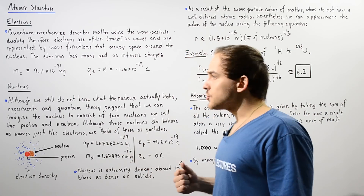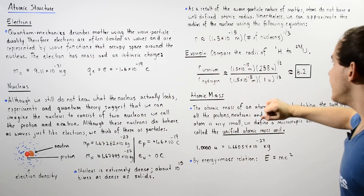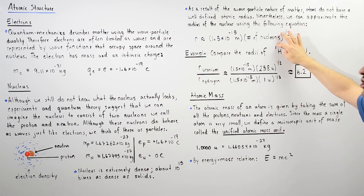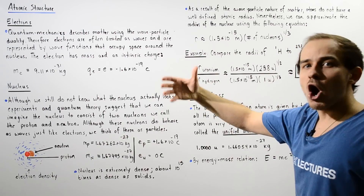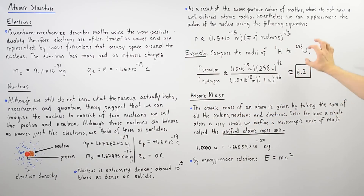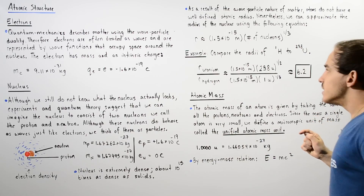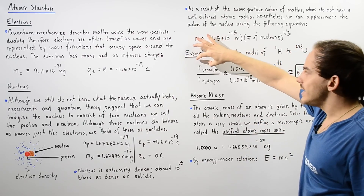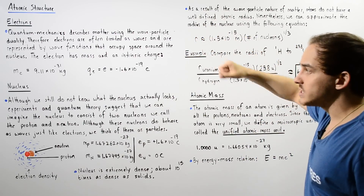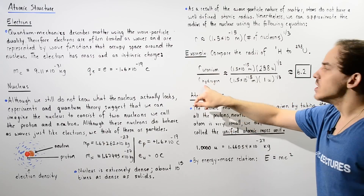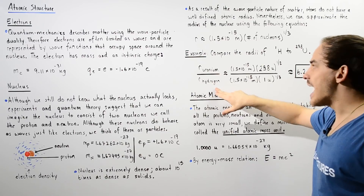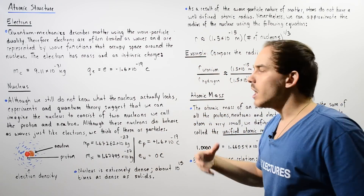We can use this equation to compare the radii of the hydrogen atom, which has one proton and zero neutrons in the nucleus, to one of the largest atoms known — uranium — which has a total atomic mass of 238 unified atomic mass units. To compare the radii of these two atoms, we can set up a ratio: the radius of uranium to the radius of the hydrogen atom. We would expect the radius of uranium to be greater than that of hydrogen, so this ratio should be a number greater than 1.